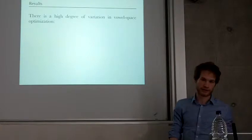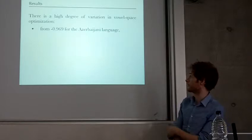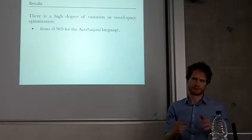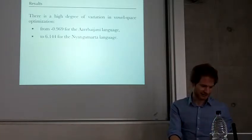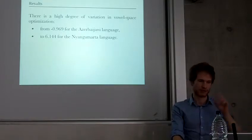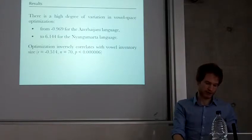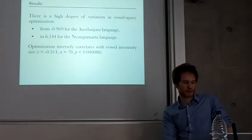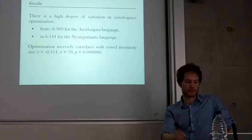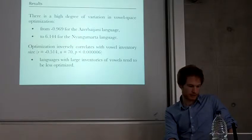The results. I found there was a high degree of variation in how optimized vowel spaces are. On the one hand, you get really unoptimized languages like Azerbaijani, where it's actually a negative Z-score, so it's actually more random than random. And then on the other end of the scale, you've got something like Nyangumata, which is a really high Z-score, so it's very unlikely that you would get that sort of distribution of vowels by chance. The optimization number inversely correlates with the inventory size, so as you get more vowels, you get less optimized systems.